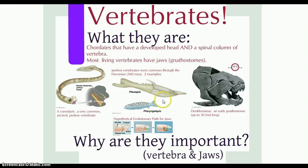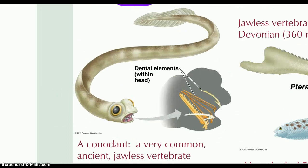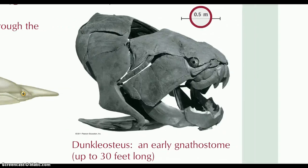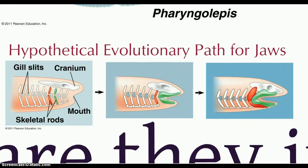Most of these organisms have jaws — we call them gnathostomes. Why are jaws important? One might presume it has something to do with predation. Early vertebrates were jawless, but the vertebrates we'll mostly look at are gnathostomes. In terms of how you get from jawless animals to animals with jaws, it's just a rearrangement of skeletal structures — it provides opportunity for organisms to capture prey and eat them.